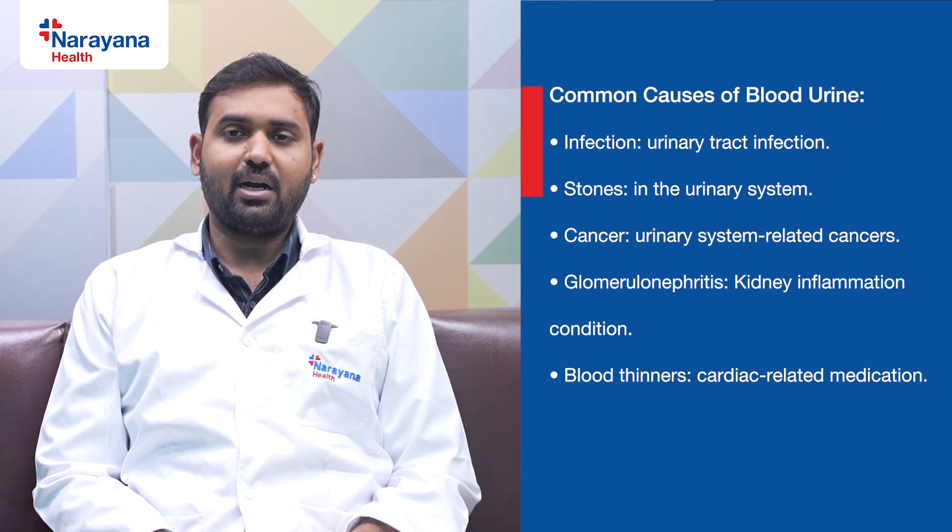Any infection of your urinary tract — in the bladder or in the kidney — can cause blood in urine. If you refer yourself to a urologist, they will do a urine examination, and if there is infection, appropriate antibiotics will be given and your treatment will be done.